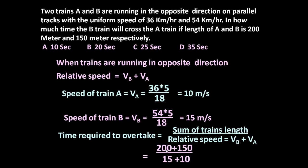So sum of train length is 200 meters plus 150 meters, and relative speed is 15 meters plus 10 meters is 35, this is 350. So this is equal to 10 seconds.